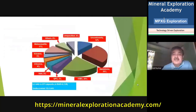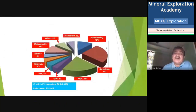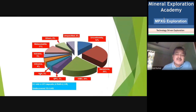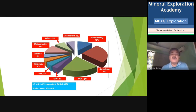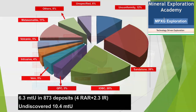As far as uranium distribution in the world is concerned, there are various deposit types. In the unconformity type, about 12% of world uranium is available — very high grade but only found in Canada and Australia. There are also paleoplacer, volcanic, intrusive, and vein types, and the oldest QPC type contributing about 3% of world uranium resources. One unique type is the iron oxide breccia complex found at Olympic Dam in Australia — a single very large deposit contributing about 20% of world uranium resources. This is the general distribution of uranium deposits in the world.